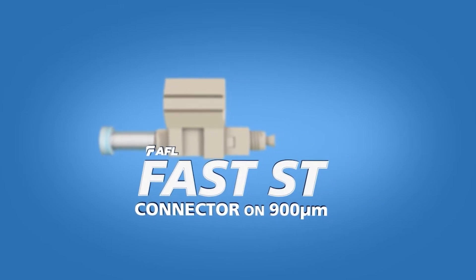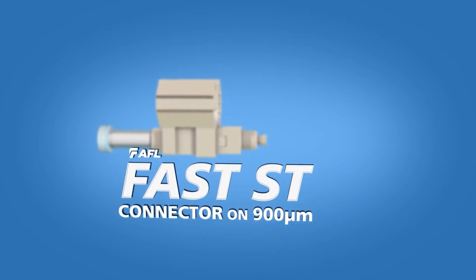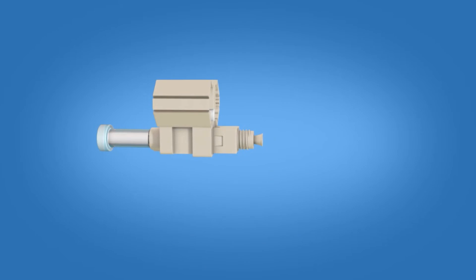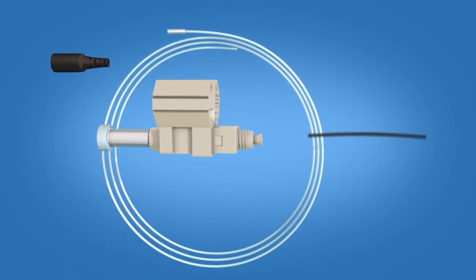The FastST connector kit contains the following items: a 900-micron boot, clear protective tubing, 250-micron tubing, ST connector housing, and a FastST connector.